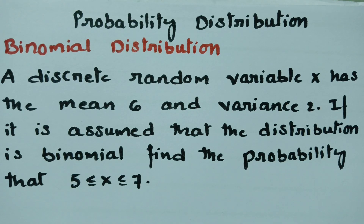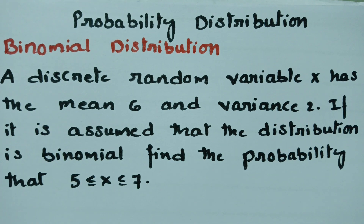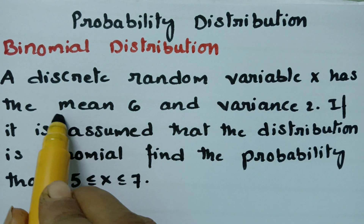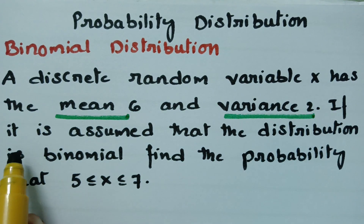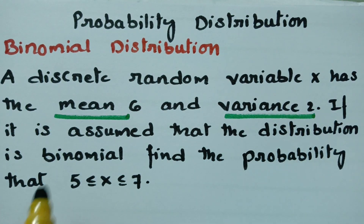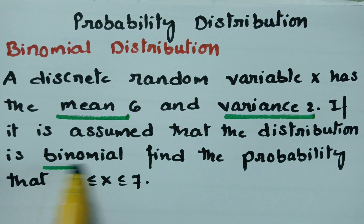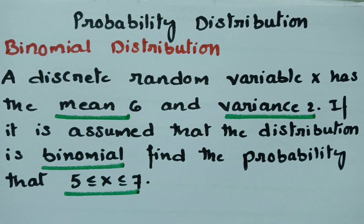Today's video is on binomial distribution, related to probability distribution. In this video, a discrete random variable X has mean 6 and variance 2. If it is assumed that the distribution is binomial, find the probability that 5 ≤ X ≤ 7.